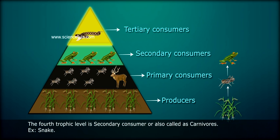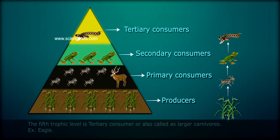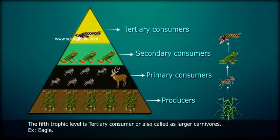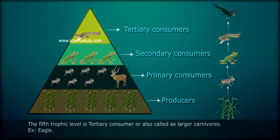The fourth trophic level is secondary consumers, also called carnivores, e.g. snake. The fifth trophic level is tertiary consumers, also called larger carnivores, e.g. eagle.